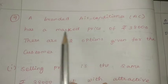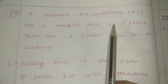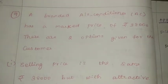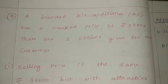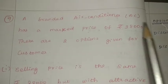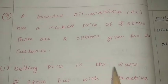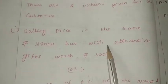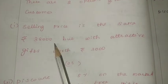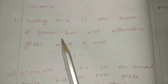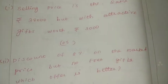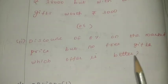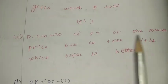A branded air conditioner has a marked price of Rs. 38,000. There are two options given for the customer. Option 1: selling price of Rs. 38,000 with a free gift worth Rs. 3,000. Option 2: a discount of 8% but no free gift.